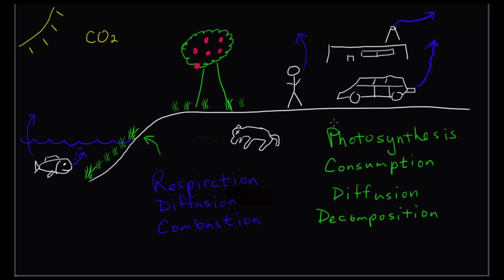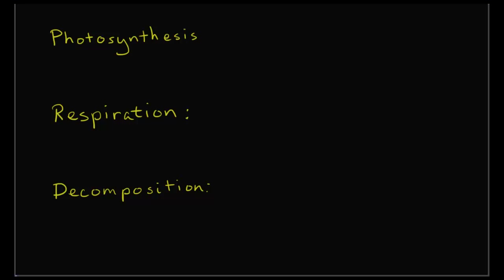So we have all these different processes and all these different ways carbon is cycled throughout the earth and recycled and used over and over again. So to go over, we have photosynthesis, and this is getting long. Photosynthesis which is plants take in CO2. Respiration is animals breathe out CO2.